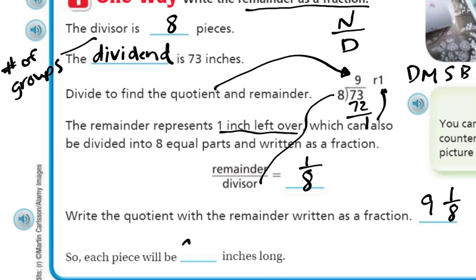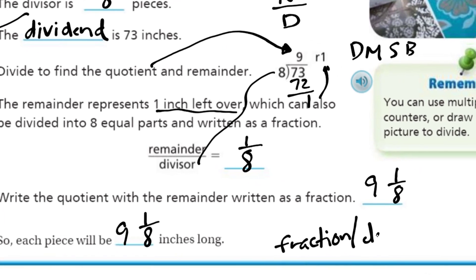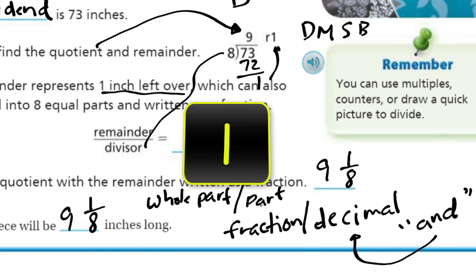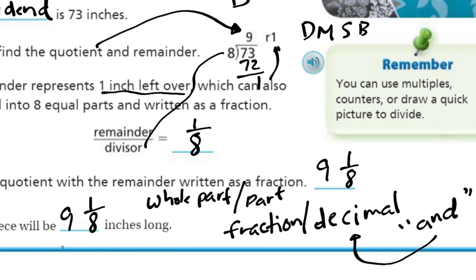Each piece will be nine and one-eighth. Whenever we say the word 'and,' that's the sign of a fraction or a decimal. When we use 'and' in math, we're referring to what's to the right of the decimal — meaning here's our whole number part, and then there's just a part, not the whole. Nine is the whole part; one-eighth is the part. That one-eighth is your fraction and your decimal. So, nine and one-eighth inches long.